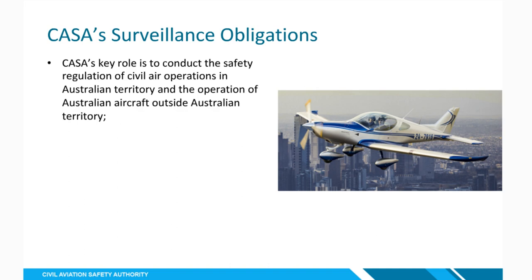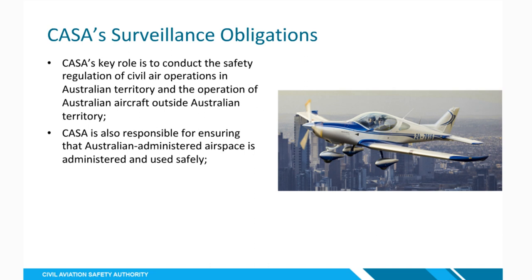CASA's key role is to conduct safety regulation of civil air operations in Australian territory and for aircraft that go outside Australian territories. Aerodromes are a key component of that safety regulation role — it's very difficult for an airplane to leave or get anywhere without an aerodrome. So it's a huge responsibility of aerodrome operators to ensure the safety outcomes of managing an aerodrome. CASA is also responsible for ensuring the Australian administration of airspace and its safety and use, and aerodrome operators have a great responsibility ensuring the airspace around an aerodrome is managed, monitored, and reported on safely.